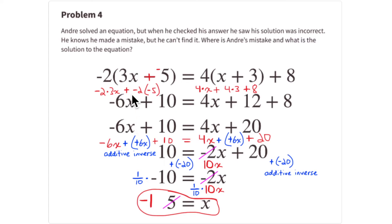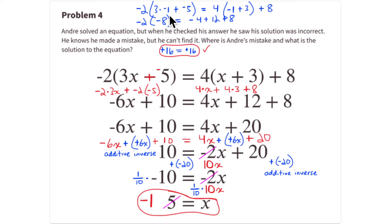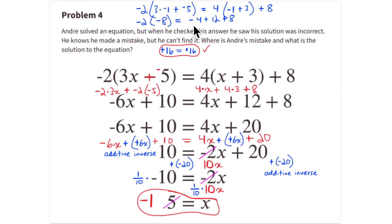Now verify x = -1 in the original equation. On the left: 3 times -1 is -3, plus -5 is -8, 2 times -8 is -16, and the opposite is +16. On the right using the distributive property: 4 times -1 is -4, and 4 times 3 is 12. Then 12 + 8 is 20, and -4 + 20 is 16. So 16 = 16 — confirmed. x = -1 is the solution.